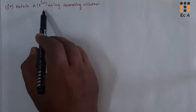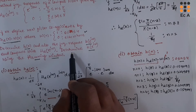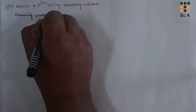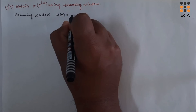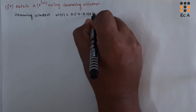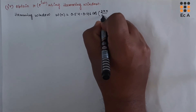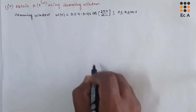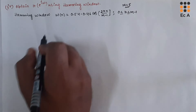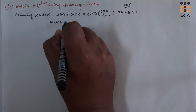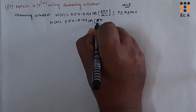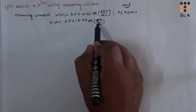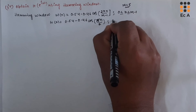Now let us obtain H of e^jω using the Hamming window. The Hamming window is given as ω(n) equals 0.54 minus 0.46·cos(2πn/(M−1)), for n ranging from 0 to M−1. Since M equals 5, this becomes ω(n) equals 0.54 minus 0.46·cos(πn/2), for n ranging from 0 to 4.